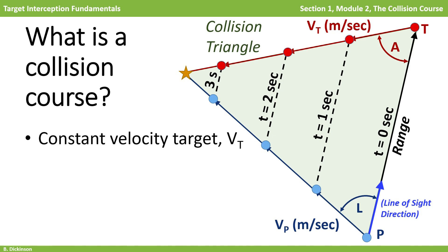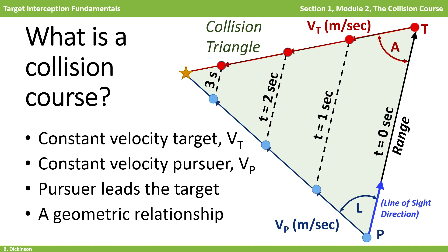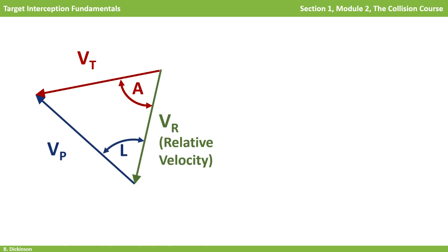In summary, this relies on constant target velocity, constant pursuer velocity, the lead angle, and a geometric relationship. Differential equations are not needed to describe collision — instead, we can use trigonometry. Because the velocities are constant, we can construct a similar collision triangle based off the velocity vectors, with a relative velocity vector between the pursuer and target.